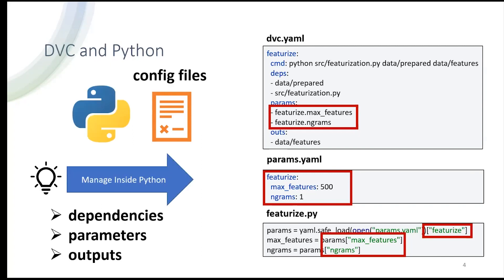My idea was: why not manage all of this inside Python? I want to highlight that I really like the idea of DVC being language agnostic, because in the computational physics department, we also use a lot of tools that do not really nicely interface with Python — often legacy tools. On the other hand, because those input scripts are not YAML or JSON, I found myself using templating languages like Jinja2 to write those input scripts, and was back in Python anyway. So I came up with the idea of managing all these dependencies, parameters, and outputs in the Python script — building the computational graph there itself, and only using DVC in the back end.